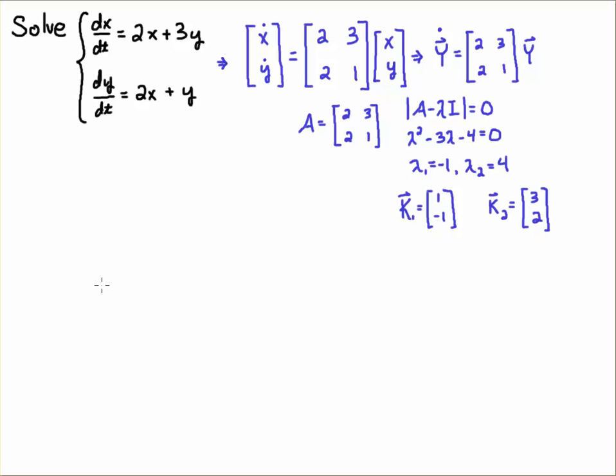And then so the corresponding eigenvectors. So the eigenvector that corresponds to minus 1, lambda 1 equals minus 1, is the eigenvector 1, minus 1. And the eigenvector that corresponds to lambda 2, being 4, is the eigenvector 3, 2. Again, I'm just assuming you know how to go about finding these eigenvalues and eigenvectors.